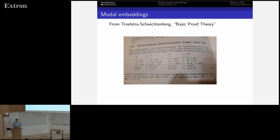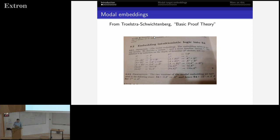Model embeddings — this is a page from the basic proof theory textbook — these are the model embeddings that we study. We want to understand what they mean computationally and what it means to have two embeddings: what's the difference between them from the computational point of view? The embeddings are equivalent in a logical sense, but they are not equivalent in the computational sense.